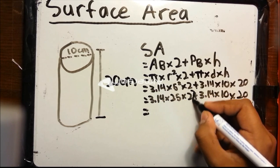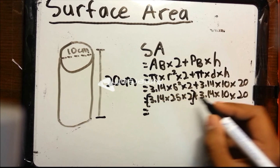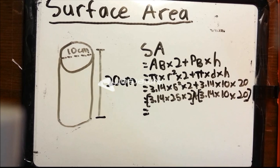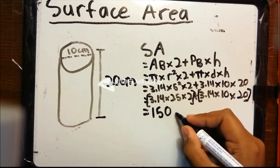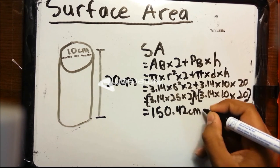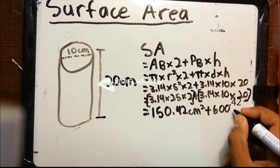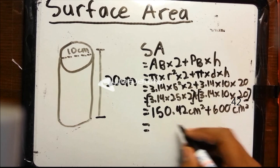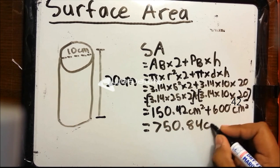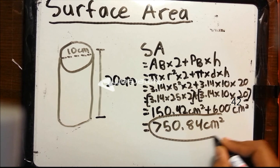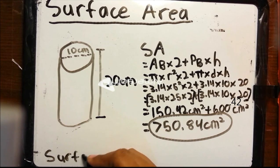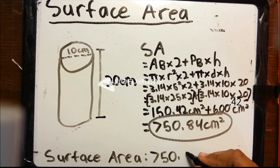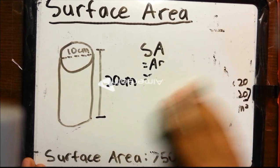Let's split this into two parts: the area of base times 2, and the perimeter of the base multiplied by the height. The first part equals 157 square centimeters and the second part equals 628 square centimeters, which in total equals 785 square centimeters. The surface area of the cylinder is 785 square centimeters.